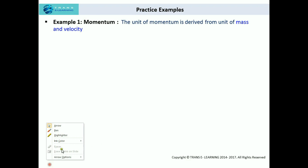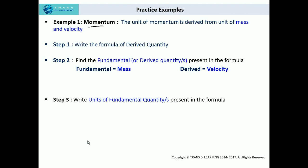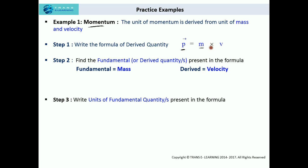Let us practice some examples. The first one: momentum. The unit of momentum is derived from the unit of mass and velocity. In this example we have to find the units for momentum, so we'll follow the steps we just learned. Starting from step one — write the formula of the derived quantity — the formula for momentum is equal to mass multiplied by velocity. We will use the unit of mass and velocity to find the units of momentum.